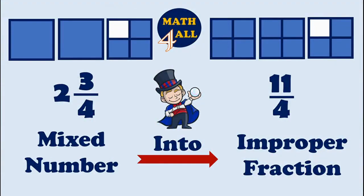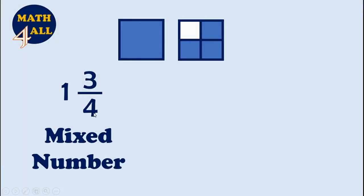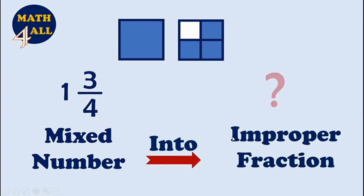Hi, today let's learn how to convert a mixed number into an improper fraction. Let's read this fraction: one and three-fourths. This is a mixed number consisting of a whole number and a fraction. Now we need to convert this mixed number into an improper fraction. We have a model that represents this fraction.